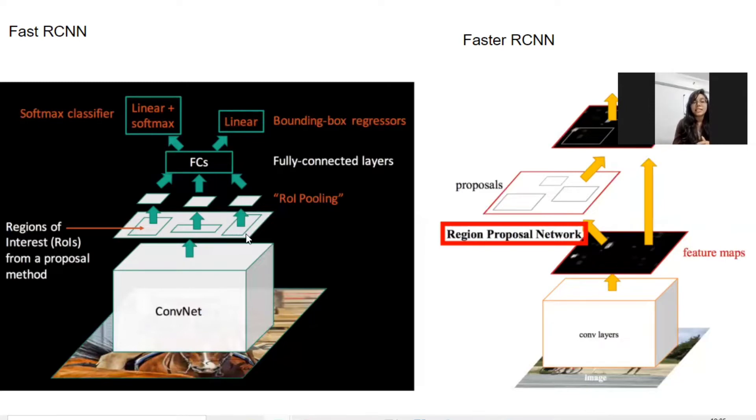this region of interest has to get converted to a specific size. As it has to pass through fully connected, all the regions of interest should be of some particular size according to the next layer. For example, it could be 3 by 3, 4 by 4, or 4 by 3. So any sizes based on the next layer, the resizing operation is done by ROI pooling. Now we will see how ROI pooling works.